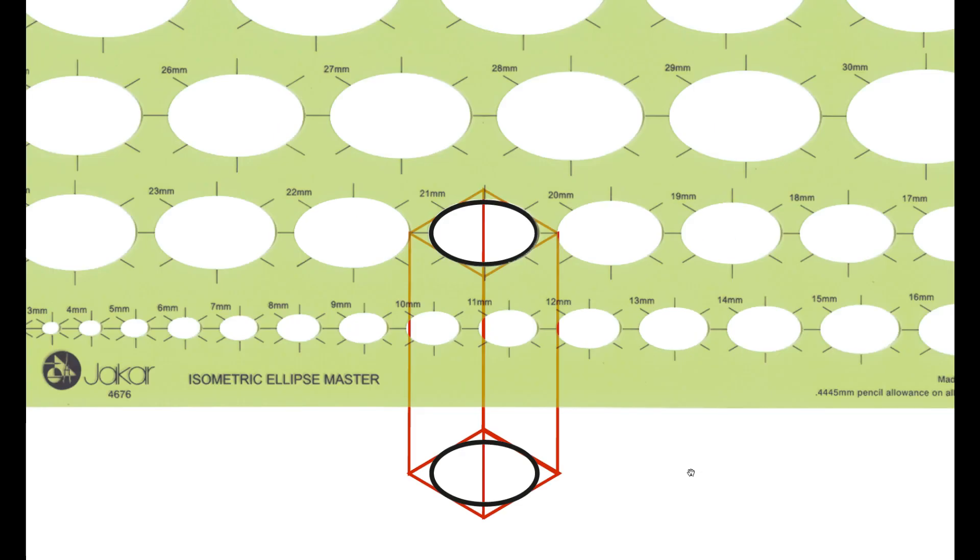So once you have found an approximately right size ellipse, just inscribe it and you will have a top and bottom. And then you can align both sides of the ellipses to create yourself a cylinder.